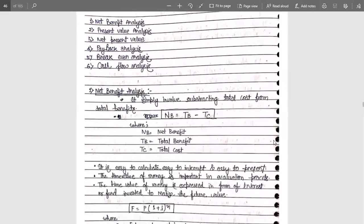Net benefit analysis simply involves subtracting the total cost from the total benefit. For example, I have put in 2,000 rupees as the total cost and I am getting 5,000 rupees in return. So TC (total cost) equals 2,000 rupees and TB (total benefit) equals 5,000 rupees. When I put in 2,000 rupees, my actual net benefit is 3,000 rupees. The difference between total benefit and total cost acts as the net benefit — net benefit equals 3,000 rupees.